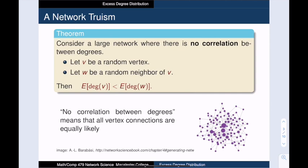And let w be a randomly chosen neighbor of v. Then on average, the degree of the random neighbor w will be larger than the degree of the original vertex v.